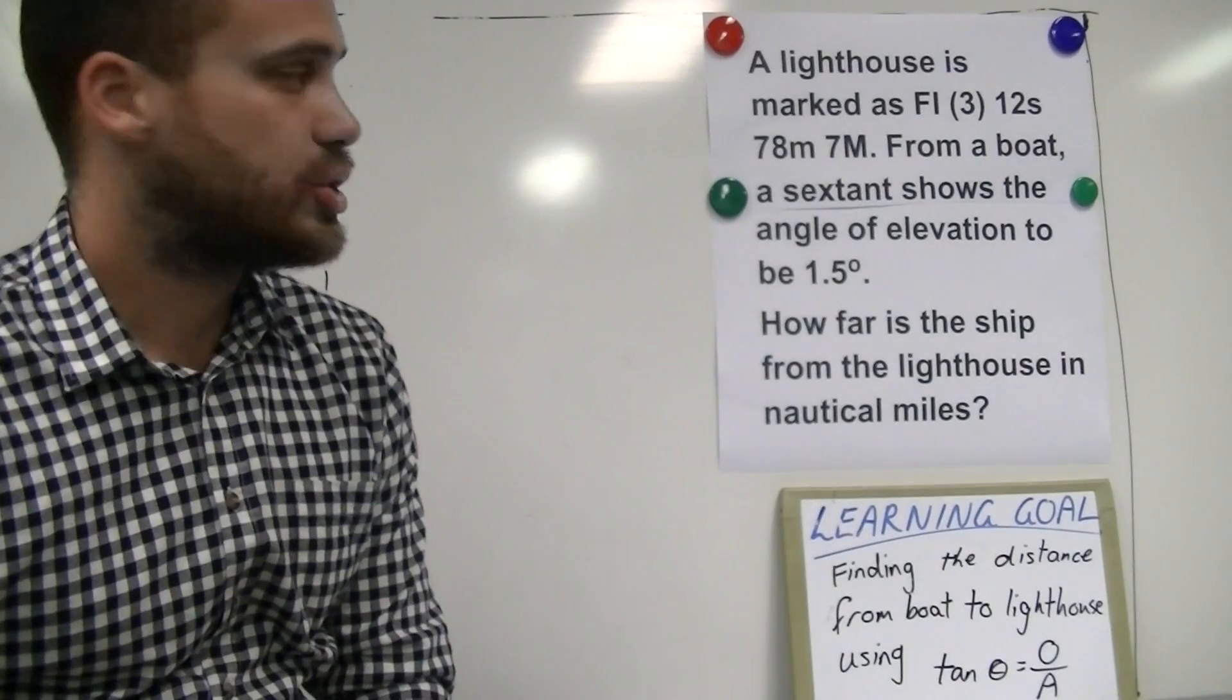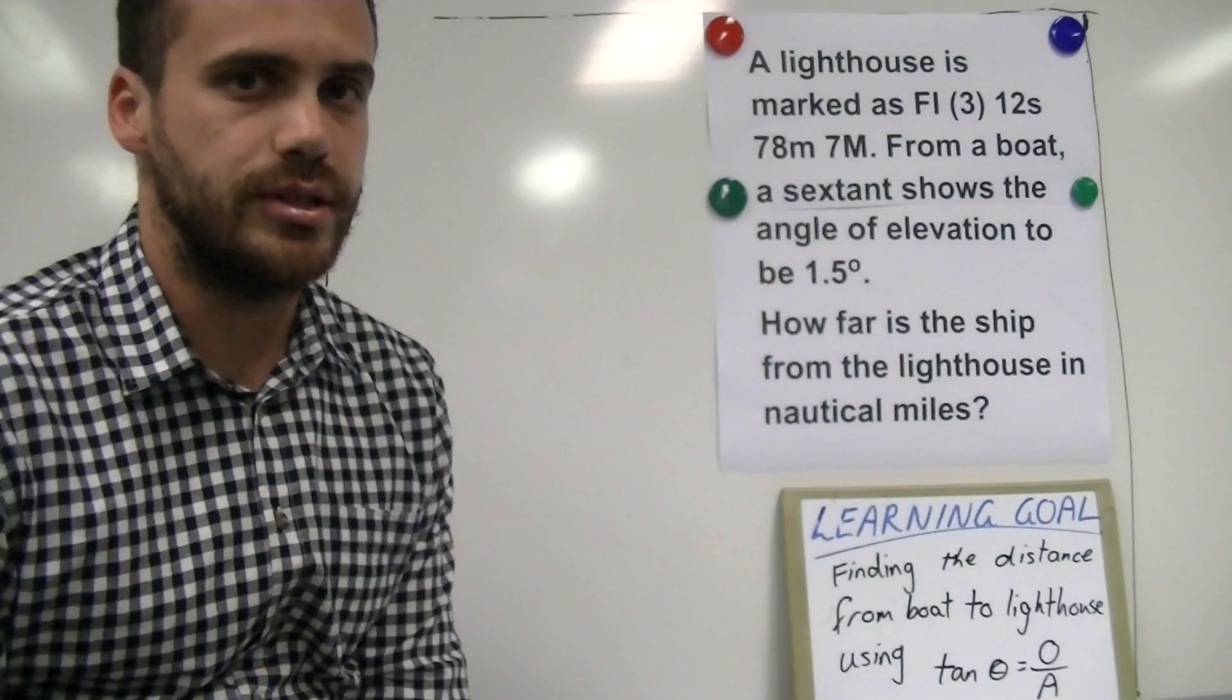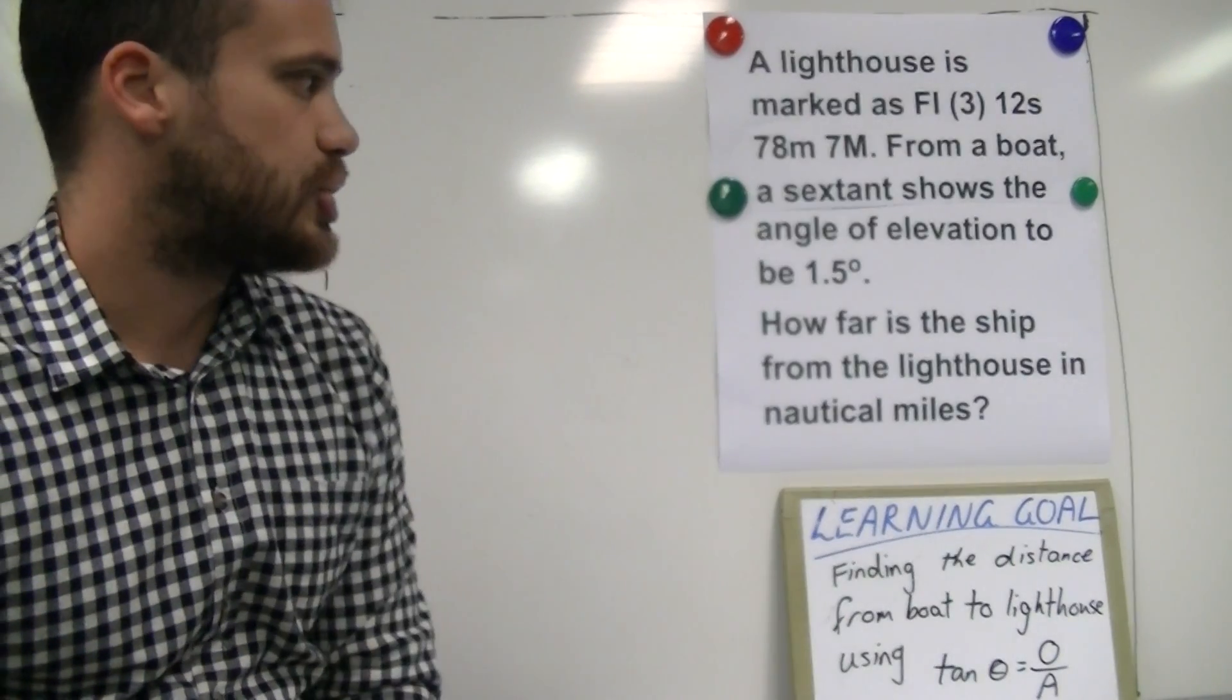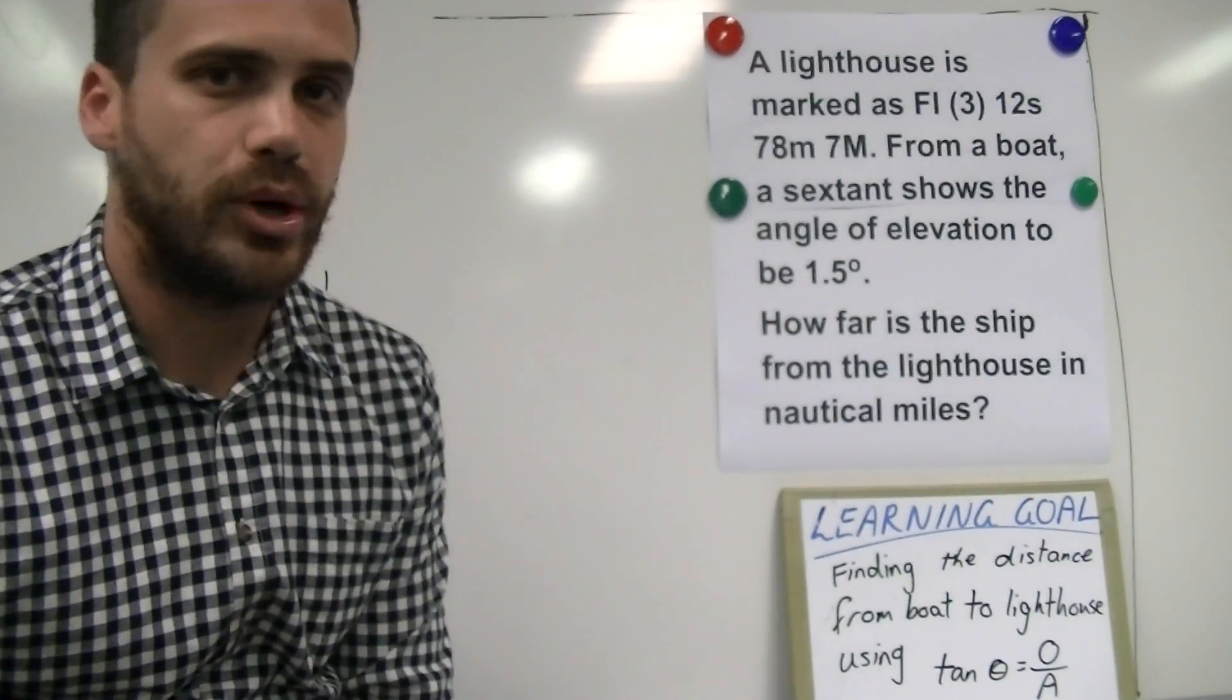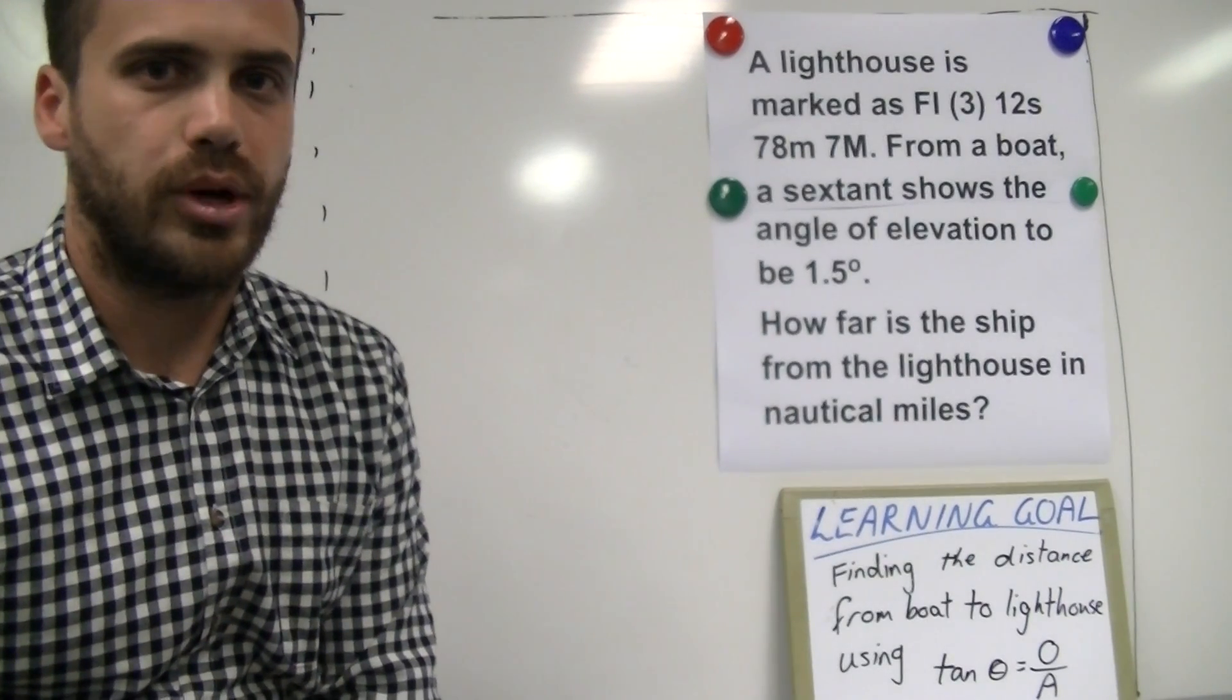From a boat, a sextant shows that the angle of elevation to be 1.5 degrees. How far is the ship from the lighthouse in nautical miles? Now the last part of that question is really important too. Nautical miles.